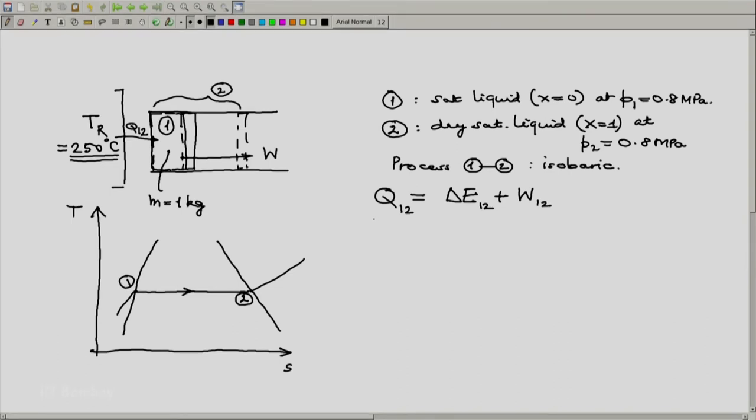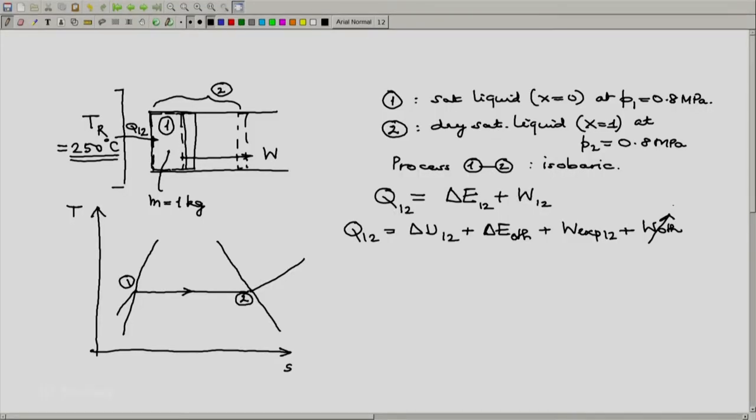First thing we do is expand. Q12 is an unknown. We have to determine that. So we write Q12 is delta U12 plus delta E other plus W expansion plus W other. Since there is absolutely no hint of a stirrer or an electric connection or anything like that, we can assume this to be 0 or negligible.